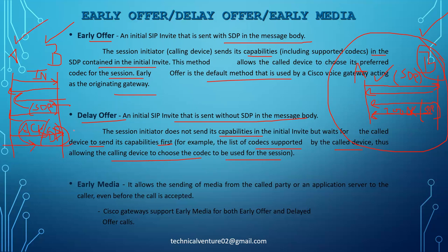Early media allows media to be sent from the called party or a server to the caller even before the call is accepted. A common example is a caller tune — when you call someone with a caller tune enabled, you hear that media immediately. Early media uses 183 Session Progress instead of 180 Ringing, and 183 carries SDP with the media information to be played.